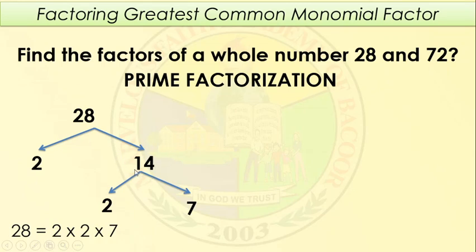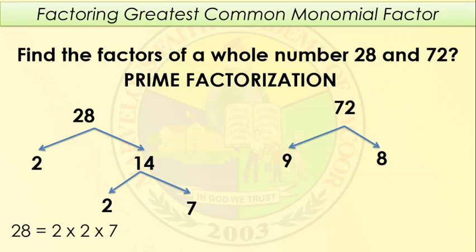Hindi isinama si 14 kasi meron pa siyang prime factors. Kapag sinabi nating prime numbers, ang factor lang niya is 1 at yung sarili niyang number. Pero si 14 ay meron pang ibang factor, which is 2 times 7. Next, ang factor ni 72 is 9 times 8. Pwede din 36 times 2, or 4 times 18 — pero lahat ng yun is composite numbers.